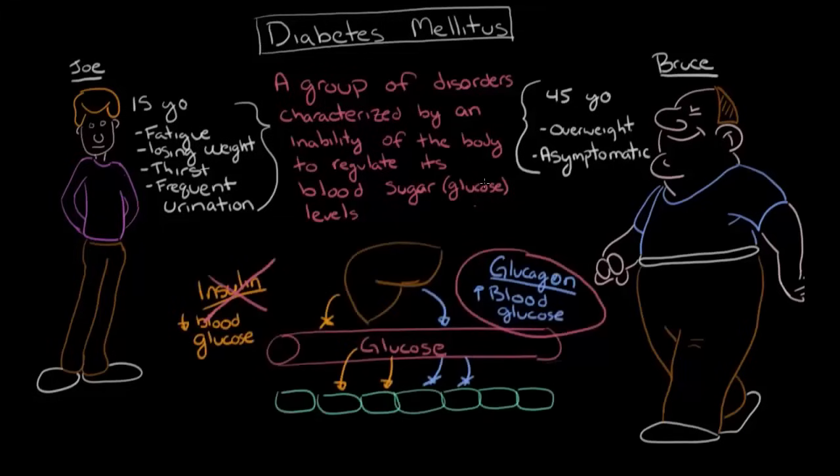So now let's go back to Joe and Bruce and understand how you can have the same disease that causes such different presentations in different people. Remember that I said that diabetes mellitus is a group of diseases. Depending on the underlying mechanism, the disease can present in very different ways. Joe over here on the left is a very typical presentation of type 1 diabetes. In type 1 diabetes, Joe's body isn't producing any insulin, and that results in that high blood sugar.